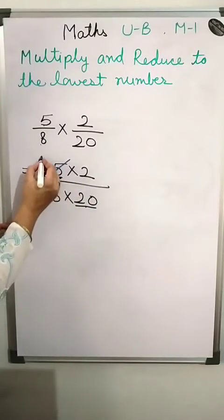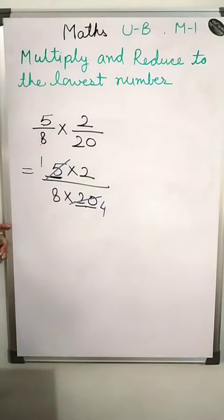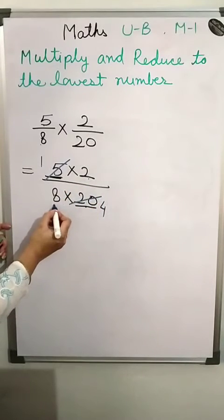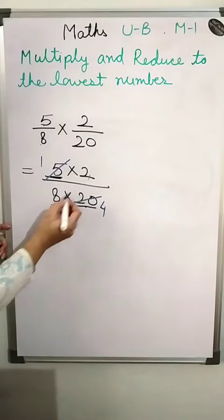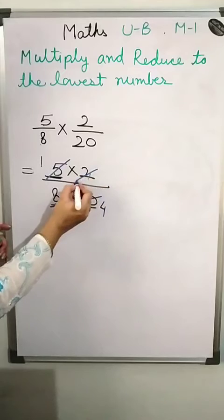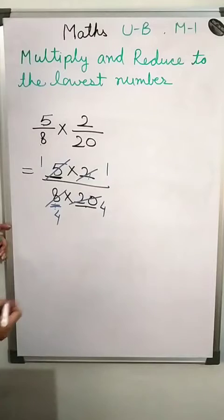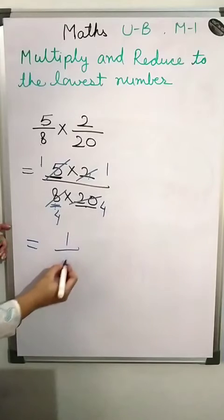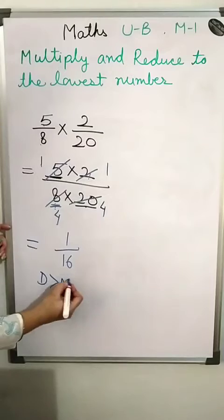5 ones are 5 and 5 fours are 20, so we reduce those. Also check 2 and 8 — 8 is a multiple of 2. 2 ones are 2 and 2 fours are 8. What is left? 1 into 1 is 1, and 4 into 4 is 16. The denominator is more than the numerator, so this is a proper fraction and the answer is 1 upon 16.